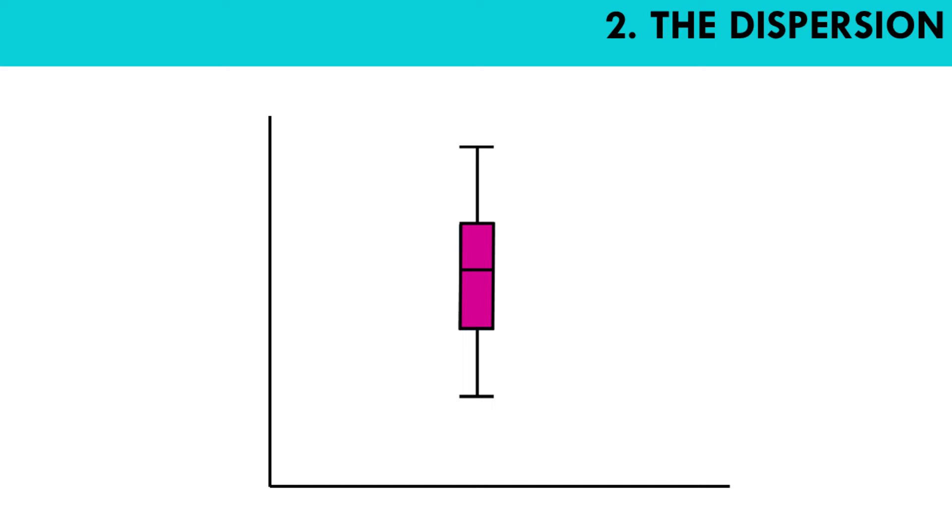The dispersion of the data set is another important piece of information. Basically, how stretched or squeezed is our distribution. We can observe also the range and the interquartile range.